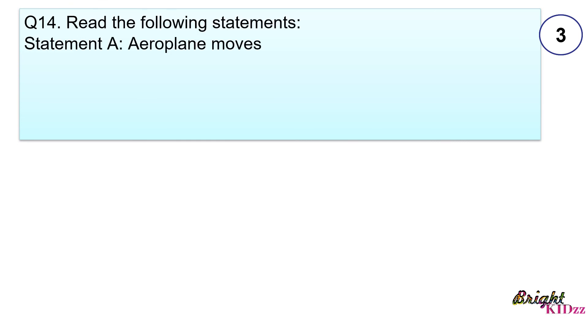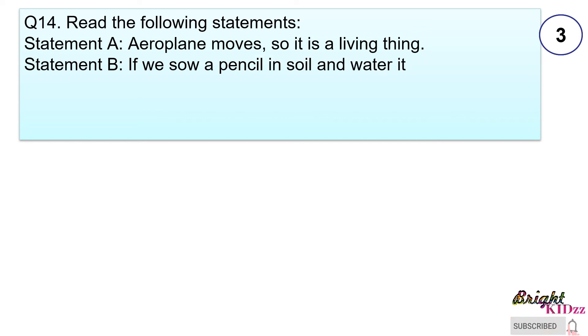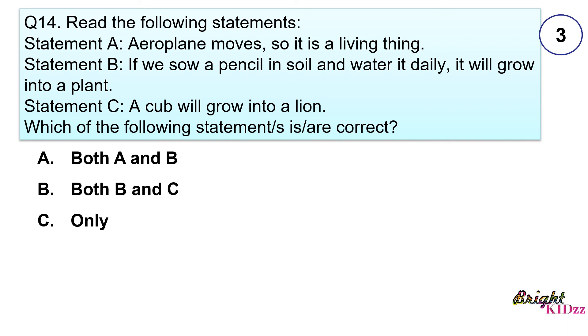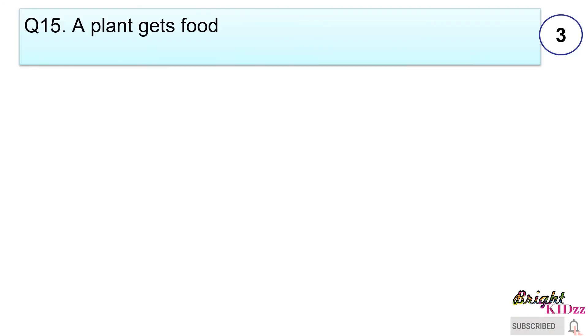Read the following statements. Statement A: Aeroplane moves so it is a living thing. Statement B: If we sow a pencil in soil and water it daily it will grow into a plant. Statement C: A cub will grow into a lion. Which of the following statement or statements is or are correct? A. Both A and B, B. Both B and C, C. Only A, D. Only C. Answer D. Only C statement is correct, that is a cub will grow into a lion.